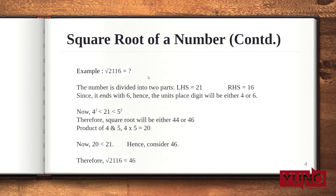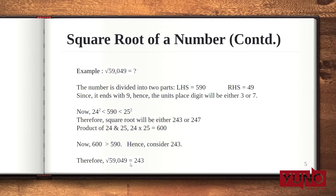The next step is to see between which square numbers 21 lies. 21 lies between the squares of 4 and 5, that is 16 and 25. We always choose the lower number, so the square root can either be 44 or 46. To choose between them, we find the product of 4 and 5, which is 20. Comparing 20 and 21, we observe that 21 is greater than the product. That means we consider the bigger number. Hence, the square root of 2116 is 46.